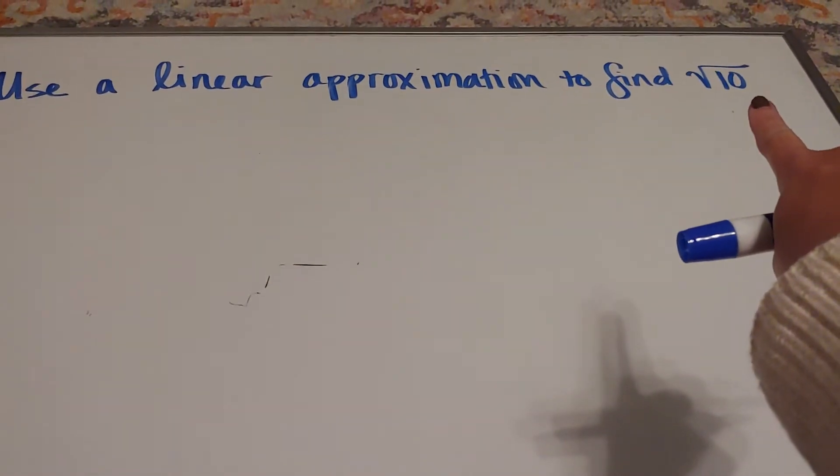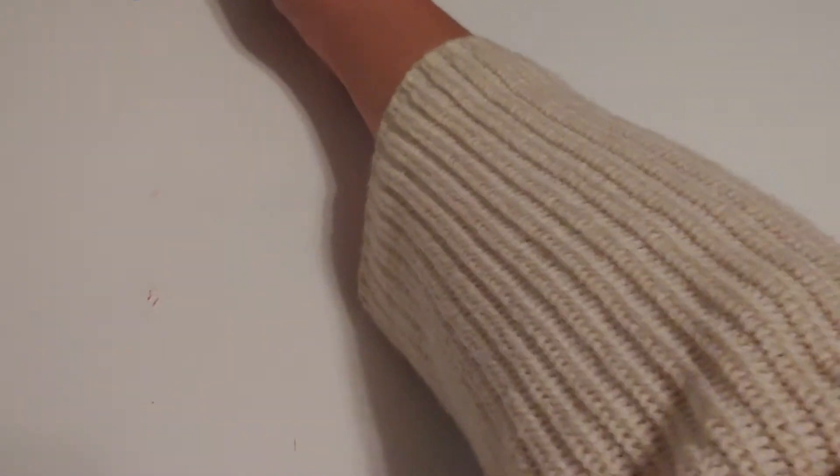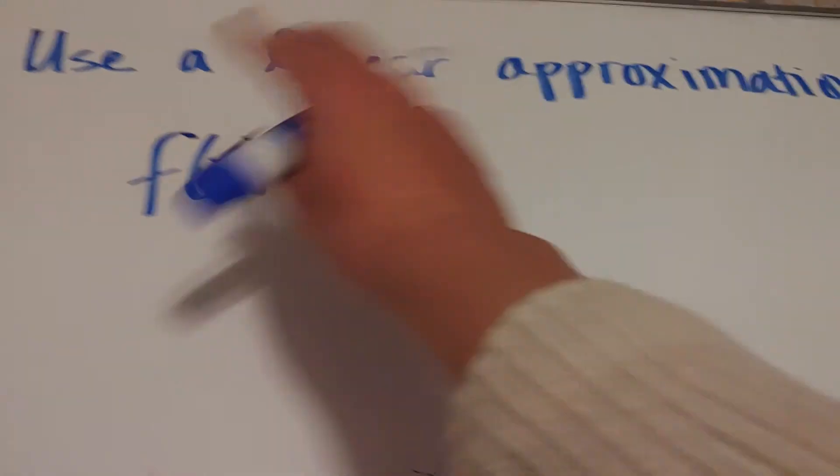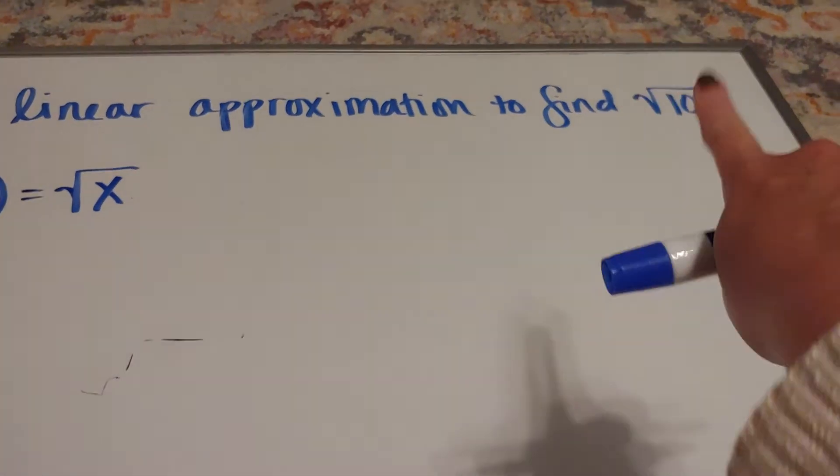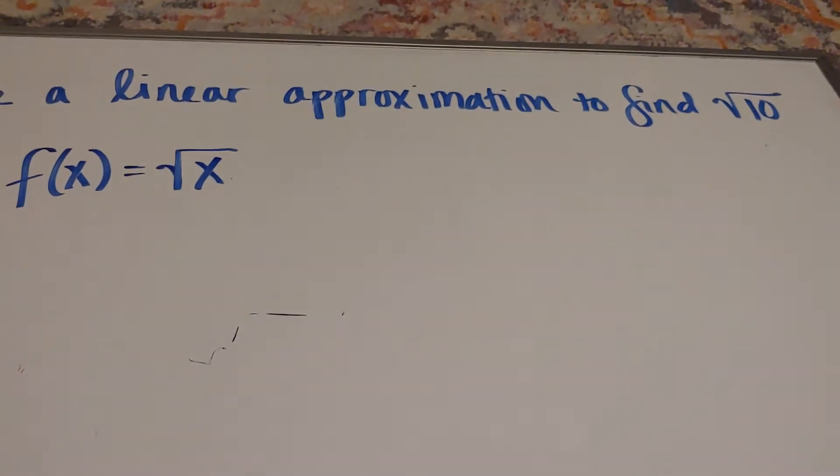Since I want to do the square root of 10, that's telling me that my function is the square root of x. So I'm going to be putting a tangent line to the square root function. If this was an ln, I'd have ln. If this was a cube root, I'd have cube root.